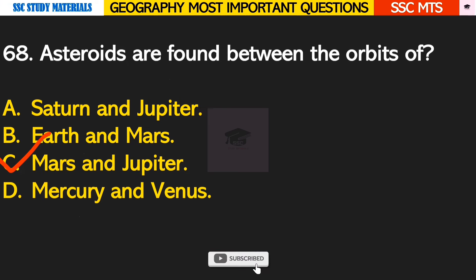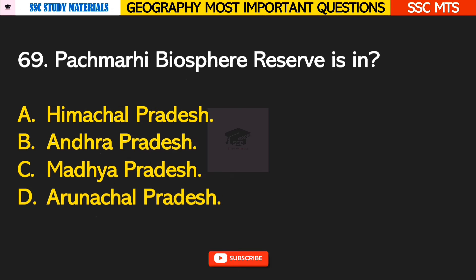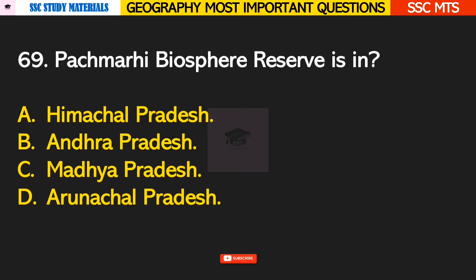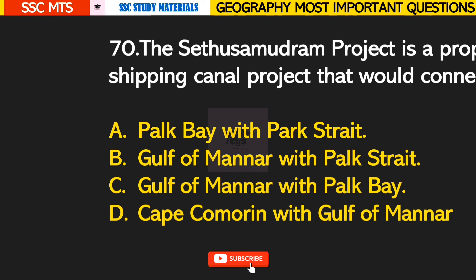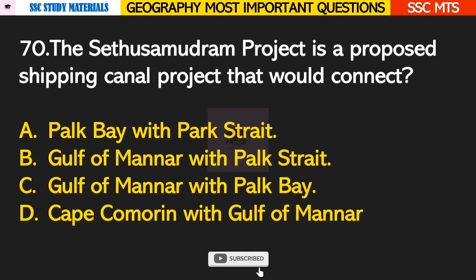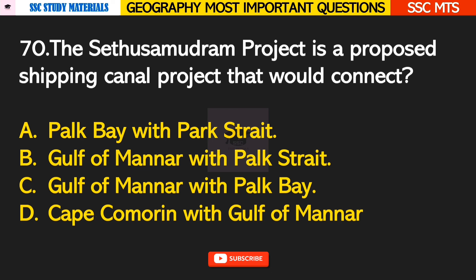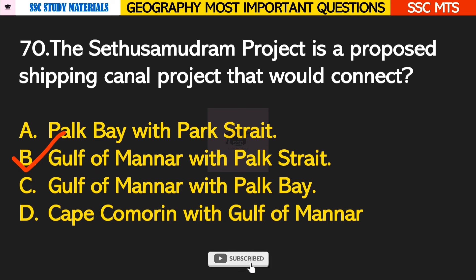Question number 69: Pachmarhi Biosphere Reserve is in? Answer C — it is in Madhya Pradesh. Question number 70: the Sethusamudram project is a proposed shipping channel project that would connect? Answer B — Gulf of Mannar with Palk Strait.